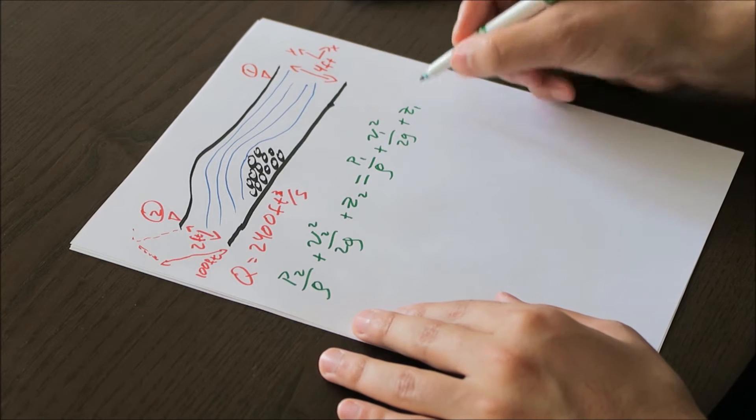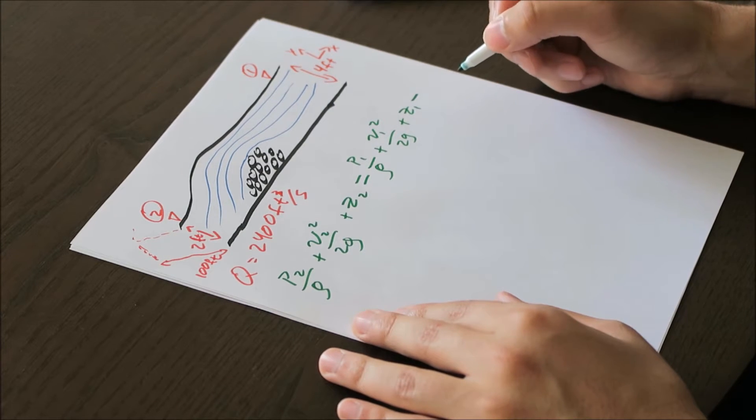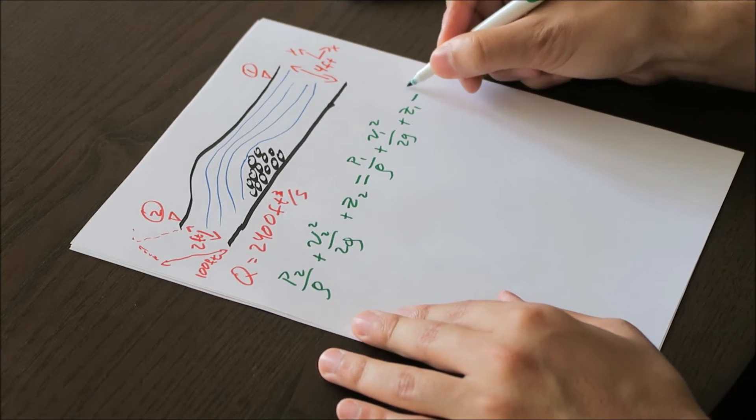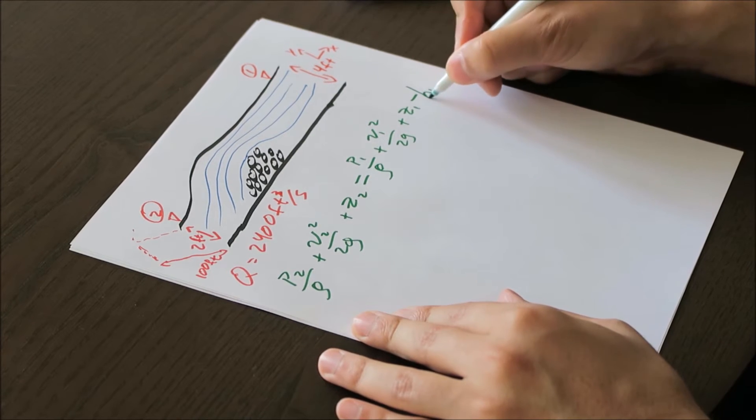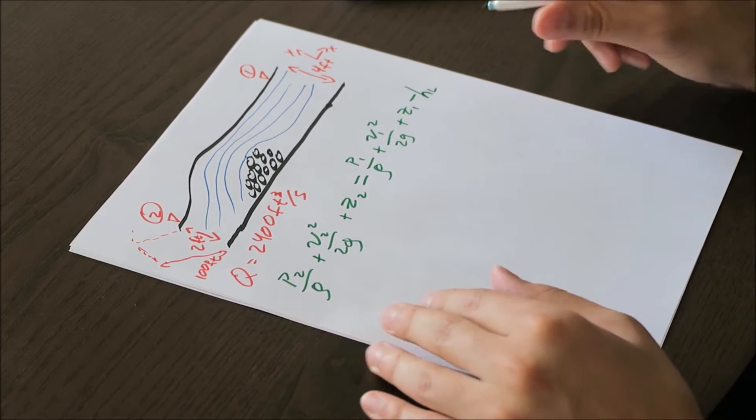So we do need to add in some term that we're going to be losing, so we'll have a minus, and I'll call it hydraulic loss, HL, H sub L.